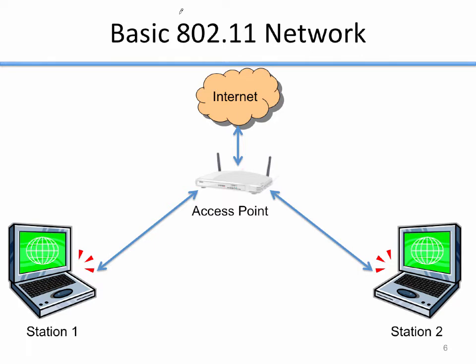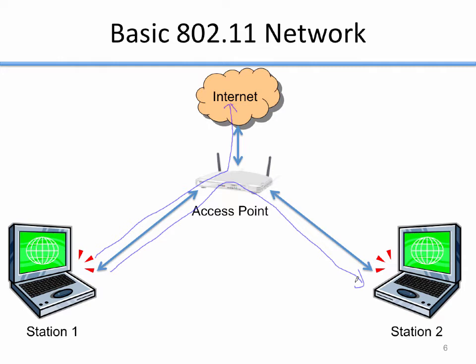A basic 802.11 network has multiple stations connected to an access point, which has a connection to the internet. If station one wants to send a packet to the internet, it sends it to the access point, which forwards it — and vice versa. If station one wants to send a packet to station two, that also goes through the access point. In a traditional 802.11 environment, all traffic goes through the access point, even between stations.